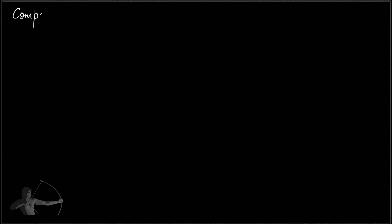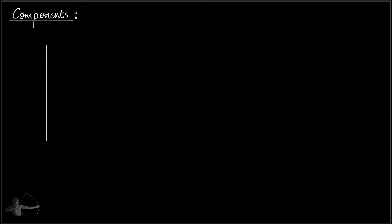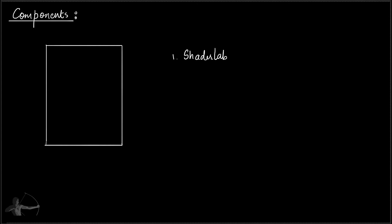Hello everyone. In this chapter we will learn about the components of the shader. Before we start understanding the components of the shader, we will understand one thing: when we start writing shaders in Unity, they will be written in two different languages — ShaderLab and CG language, which stands for C for Graphics and is a language developed by Nvidia.